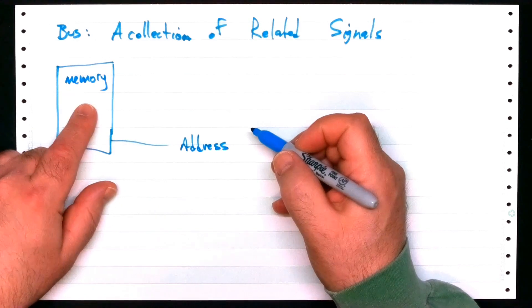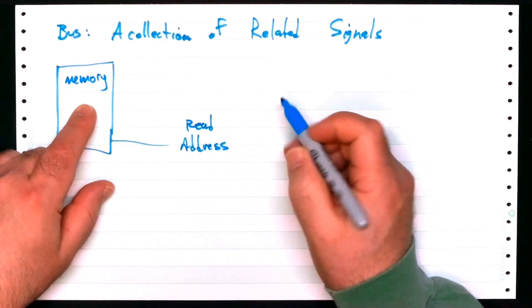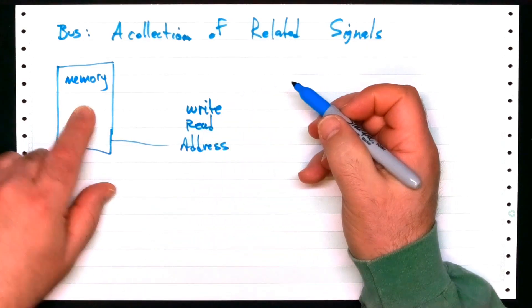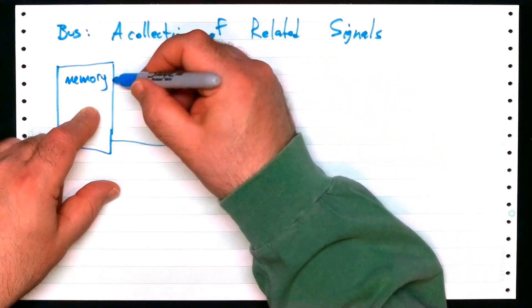Well, we know that we have to select or inform the memory what address we want to interact with. Maybe we want to read the memory, or maybe we want to write to the memory. And when we do any of these things, we need to exchange data with it.